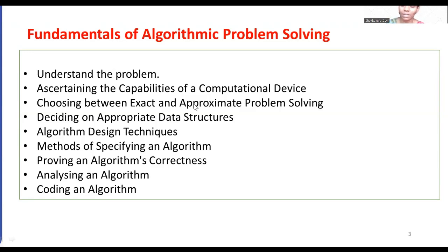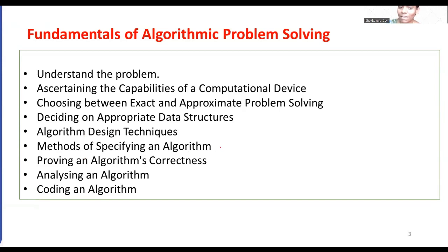These are the fundamentals of algorithm problem solving. There are a few steps we have to follow for solving our problems. The first one is understanding the problem. Second is assessing the capabilities of computational devices and choosing between exact and approximate problem solving, deciding appropriate data structures, methods of specifying an algorithm, proving algorithm correctness, analyzing an algorithm, and coding the algorithm. These are the fundamental things we have to understand for solving any problem algorithmically.